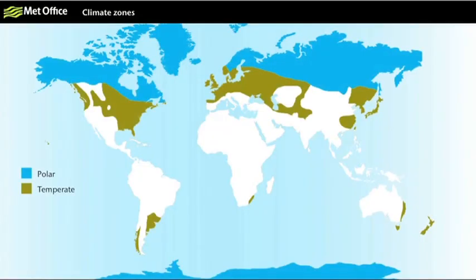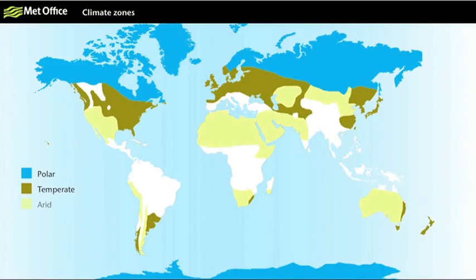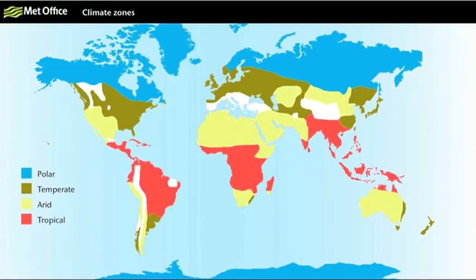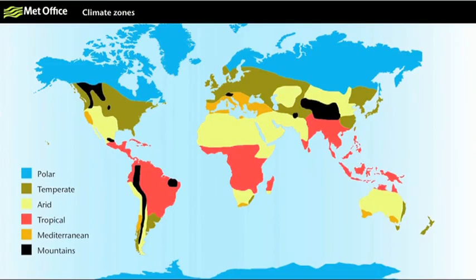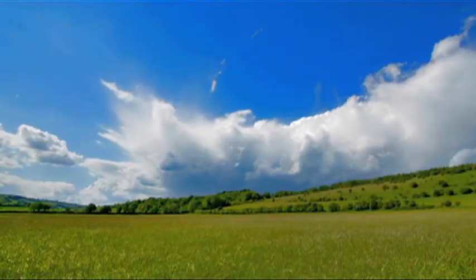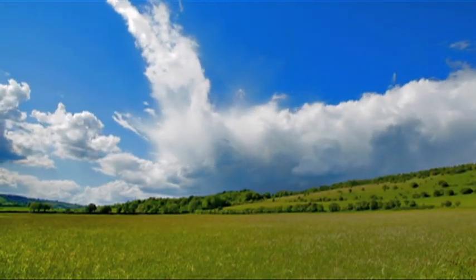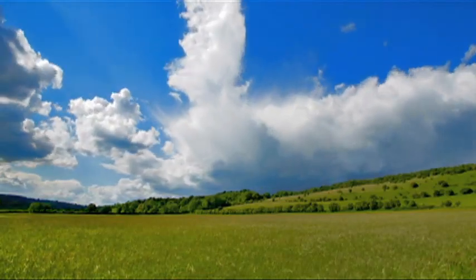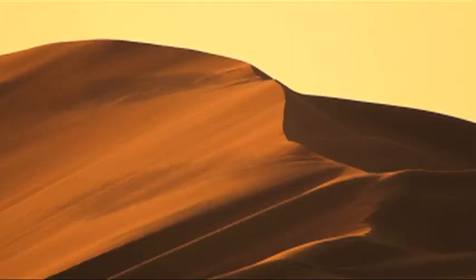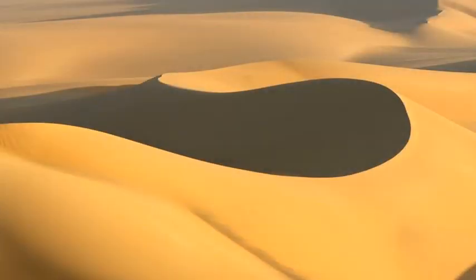Scientists have been able to define climate zones around the world. Here in the UK we have a temperate climate that is neither especially hot nor cold, wet nor dry when compared to other climates. Ours is a very different climate to that in the Sahara for example, which is known as arid because throughout the year the weather is dry and hot.